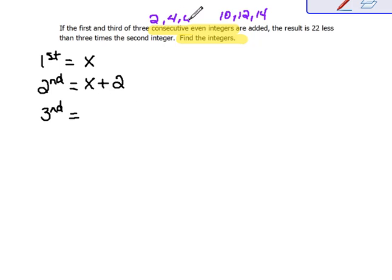Then to get to the next one, we'd have to add two more. So if we started from the first one, we actually have to add four to get to the third even integer. So we're going to write our third integer as x plus four.